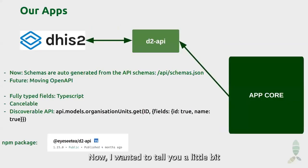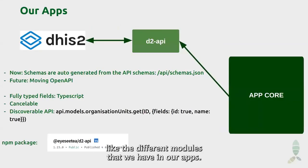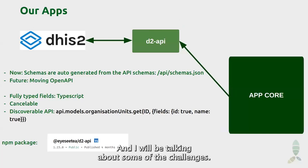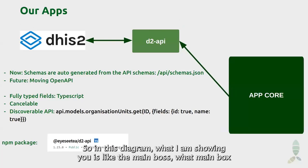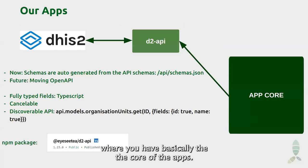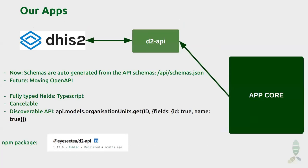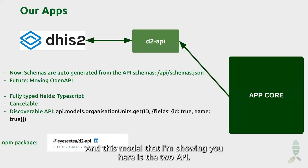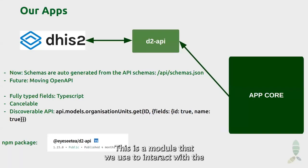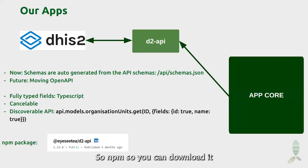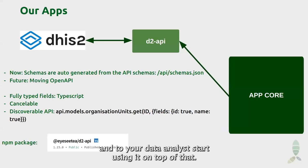Now I want to tell you about the different modules we have in our apps. We have D2 API, which is the main module we use to interact with DHIS. This module is on NPM, so you can add it to your package.json and start using it. Something technical we have been doing for a few years is automatically generating schemas for the API — we go to the /api/schemas endpoint and based on the information there, we generate TypeScript. So it's fully typed.